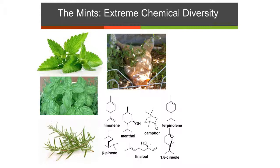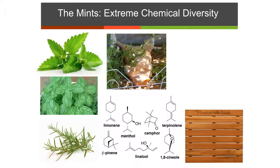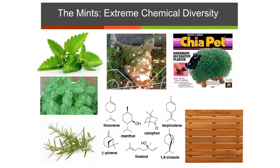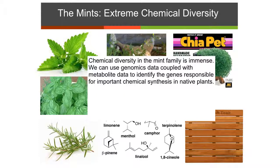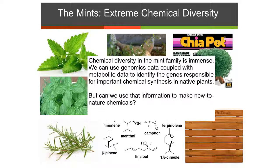Another favorite of mine is chia — the chia pet. This is now considered a superfood because it's supposed to be healthy. We're waiting to finalize an NSF grant to work on the mint family, but what I'd like to do with the foundation funds is use the data we collect from the NSF project to understand the synthesis of these diverse chemicals in this family, and then use them to make new-to-nature chemicals we haven't seen before.